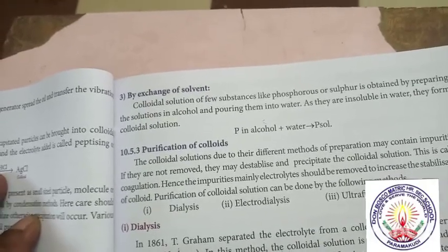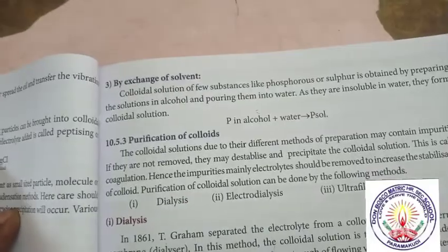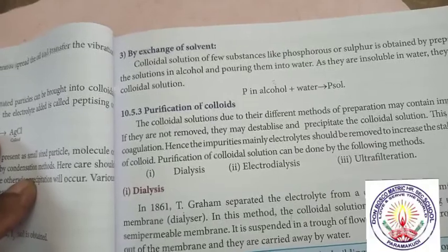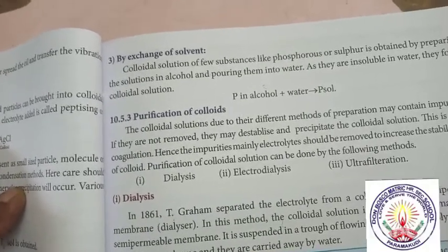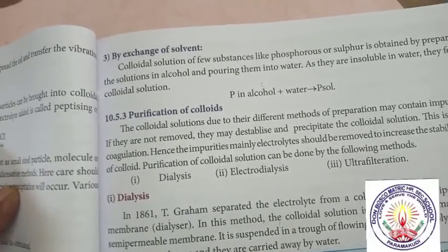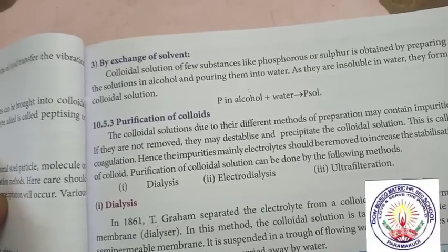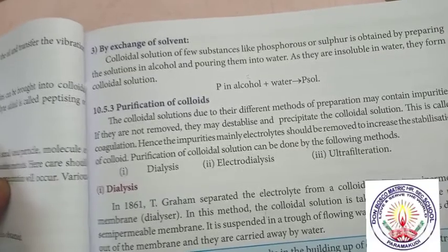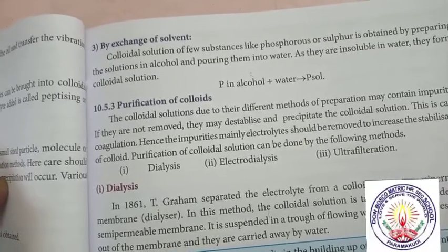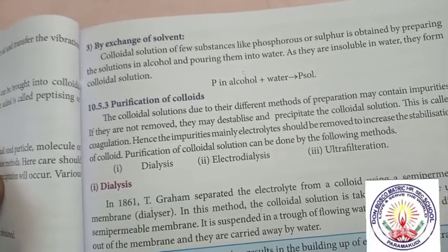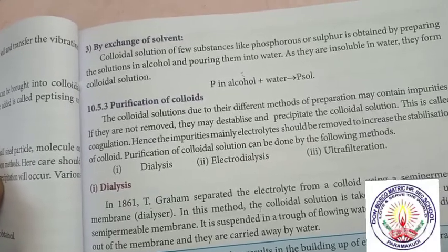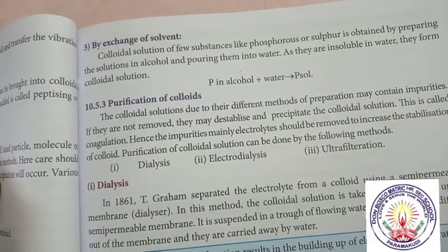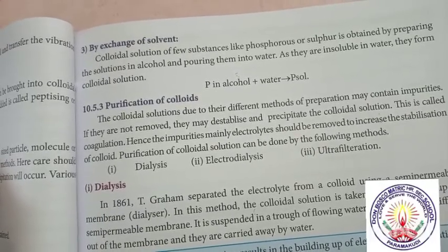Purification of colloidal solutions can be done by the following methods: dialysis, electrodialysis, and ultrafiltration. Dialysis: in 1861, Thomas Graham separated the electrolyte from a colloid using a semipermeable membrane. In this method, the colloidal solution is taken in a bag made up of semipermeable membrane and suspended in a trough of flowing water. The electrolytes diffuse out of the membrane and are carried away by water.